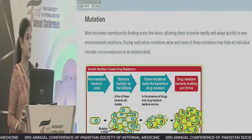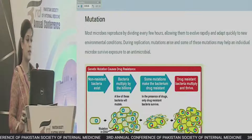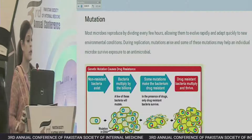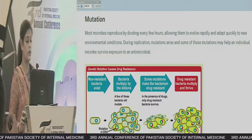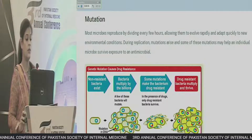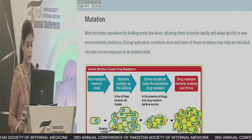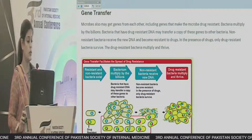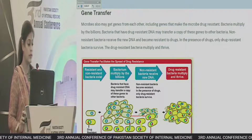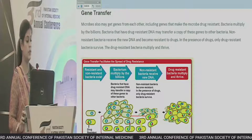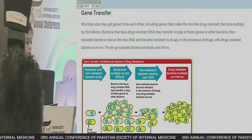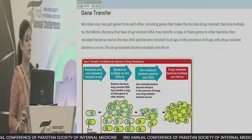Certain mutations cause drug resistance. In non-resistant bacteria, if mutations occur in the DNA, a few of these bacteria will mutate. In the presence of the drug, only the drug-resistant bacteria survive — this is antibiotic selective pressure — and the drug-resistant bacteria then multiply and thrive. Gene transfer can also facilitate the spread of drug resistance: bacteria with drug-resistant DNA may transfer a copy of those genes to other bacteria, and only the resistant bacteria survive, multiply, and thrive.